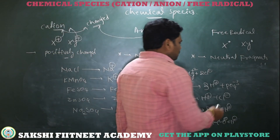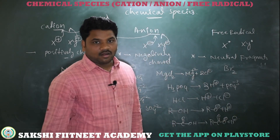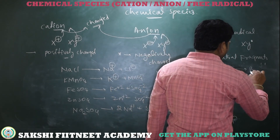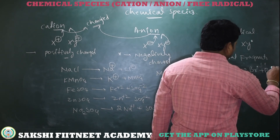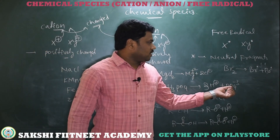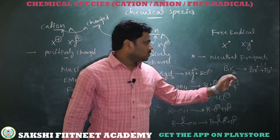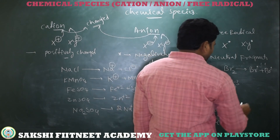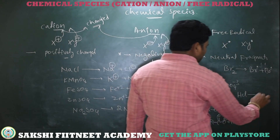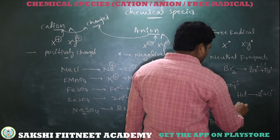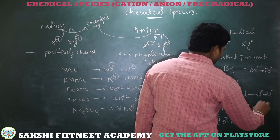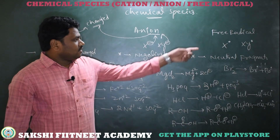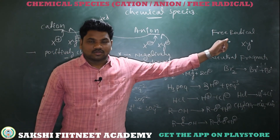Coming to free radicals — these are mostly from covalent compounds, that is organic compounds, on homolytic cleavage. For example, Br-Br on homolytic cleavage gives two Br radicals. HCl on homolytic cleavage gives H radical and Cl radical. CH₃-CH₃ on homolytic cleavage gives two CH₃ radicals. Free radicals are generated by homolytic cleavage of covalent compounds. To understand what is heterolytic cleavage and what is homolytic cleavage, watch the other video available on this topic.